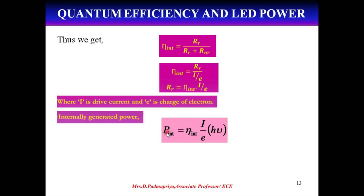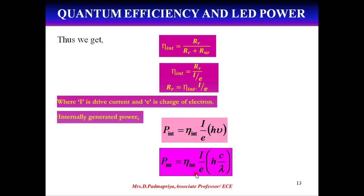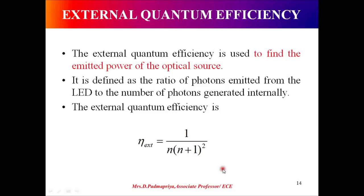Internally generated power p_int equals eta_int × (i/e) × h-mu. Using the relationship mu = c/lambda, p_int = eta_int × (i/e) × (hc/lambda). External quantum efficiency is used to find the power emitted out of the optical source. It is defined as the ratio of photons emitted from the LED to the number of photons generated internally, given by the expression eta_ext = 1 / [n(n+1)^2].